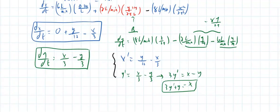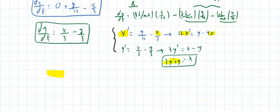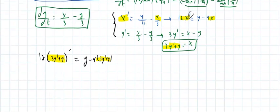I'm going to substitute that into the first equation. This was 12x prime equals y minus 4x. So 12 times the derivative of 3y prime plus y equals y minus 4 times 3y prime plus y.